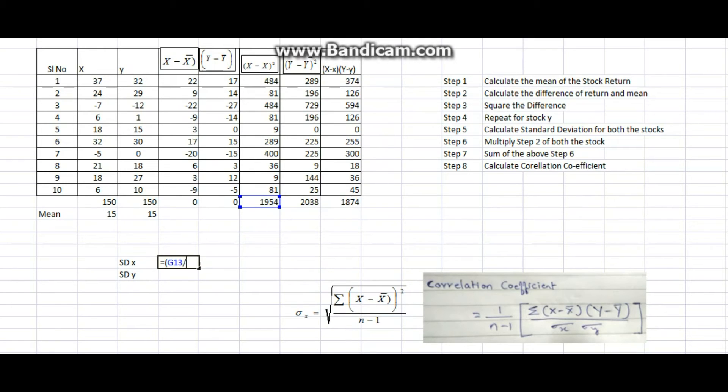Divided by bracket 10 minus one bracket close, raised to bracket one by two, which is nothing but called as square root. So I get around 14.73 as standard deviation for stock X.